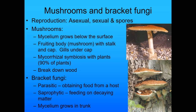Next, we're going to look at mushrooms and bracket fungi. They reproduce asexually, sexually, or with spores. When you look at a mushroom, the mycelium actually grows below the surface — what we see as a mushroom is actually just the fruiting body, with the stalk and the cap. What's under the cap is called the gills. Most of them are in mycorrhizal symbiosis with plants and tend to break down wood, where the mycelium grows inside the tree. Bracket fungi are primarily parasitic — they obtain food from the host — and some are saprophytic, meaning they feed on decaying matter.